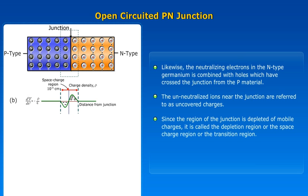Since the region of the junction is depleted of mobile charges, it is called the depletion region, or the space charge region, or the transition region.